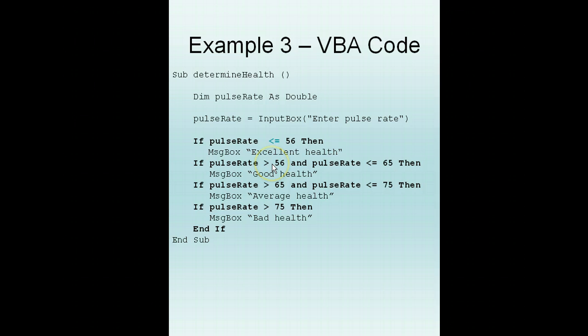I believe that you can enter this code into the code editor yourself. What I want to explain is, first we declare variable pulse rate as a double. We ask user for input pulse rate. So if it's less than or equals to 56 then we will output excellent health. If it's more than 56 or less than 65 then good health.